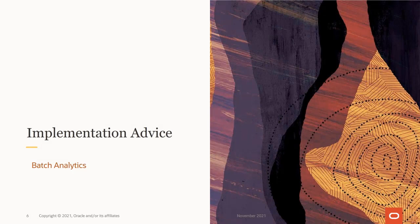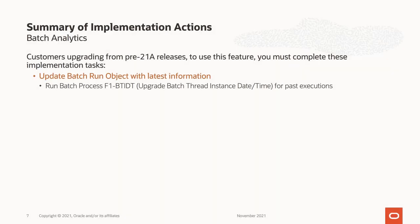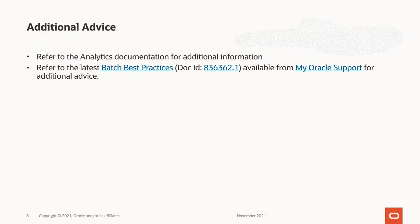In this implementation advice section, we'll go through what you need to consider before enabling this feature in your business and what you need to know to set it up. For customers upgrading from earlier versions, it is highly recommended to execute the F1BTIDT batch process so that past executions can be included in the analysis. This process cleans up the data and places the metrics for all executions in the correct places for analytics to use them. For additional advice, it is recommended to read the analytics documentation and the batch best practices technical paper. Both documents have more information about this capability including guidelines to maximize effectiveness.